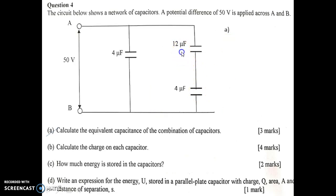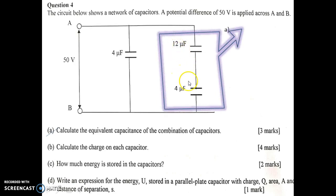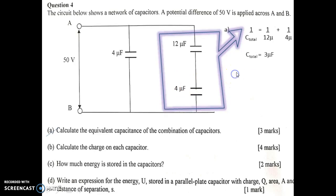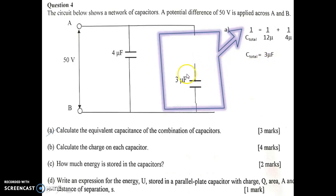Next, 12 µF and 4 µF are arranged in series. So we use the formula: 1/C total equals 1/12 plus 1/4. We get C total equals 3 µF. So the combination becomes 3 µF.